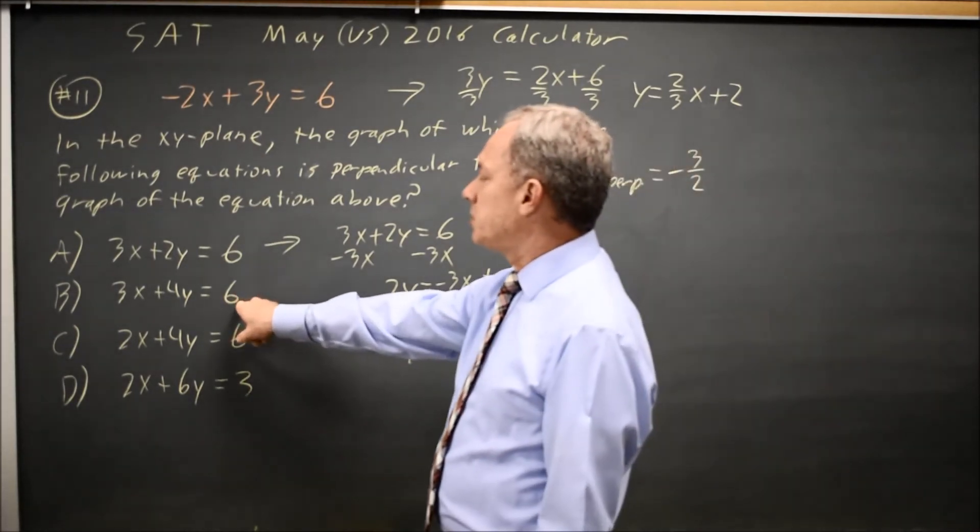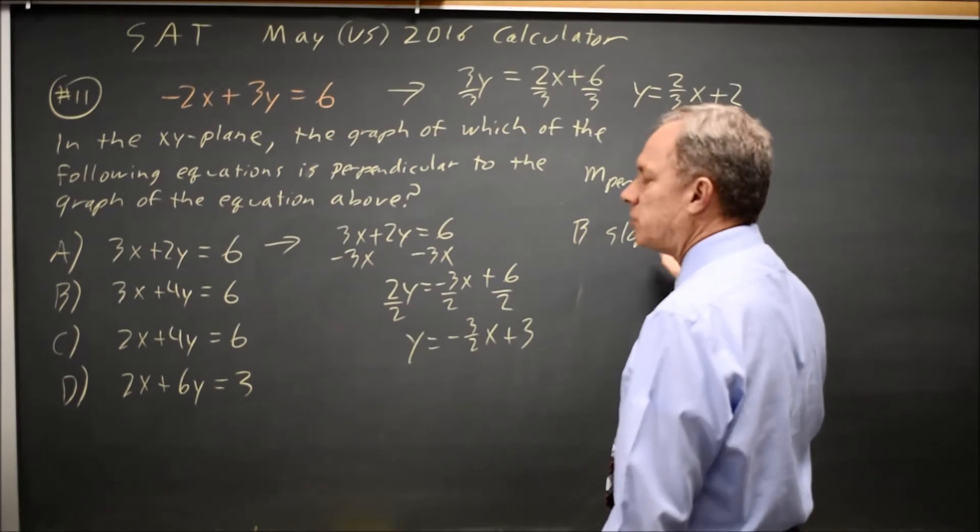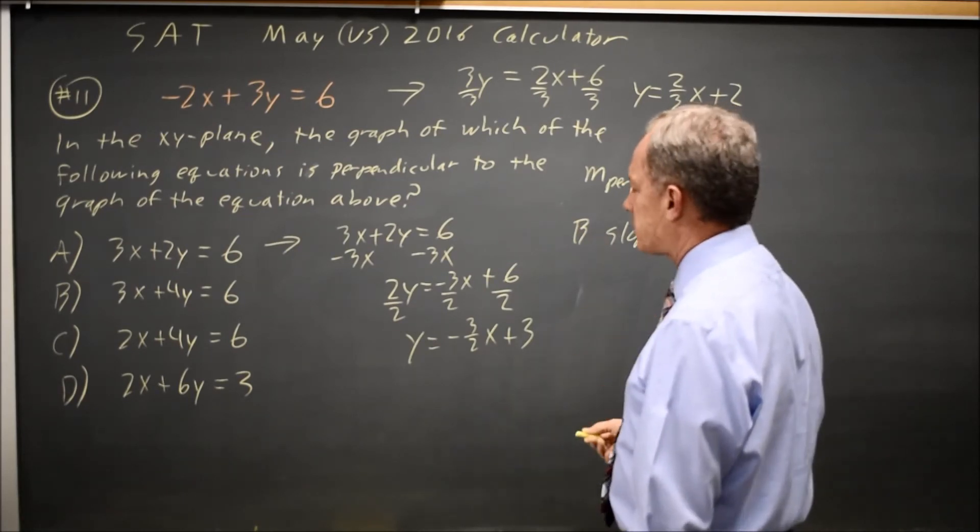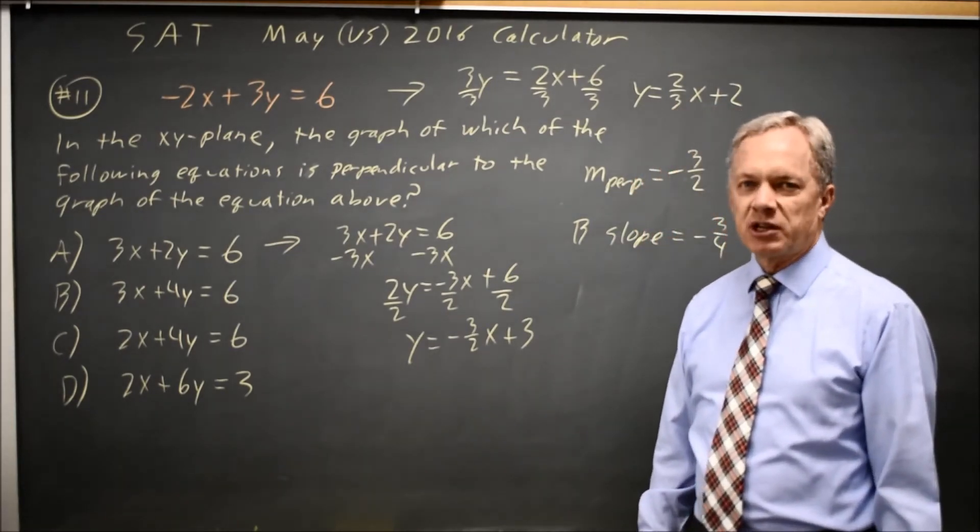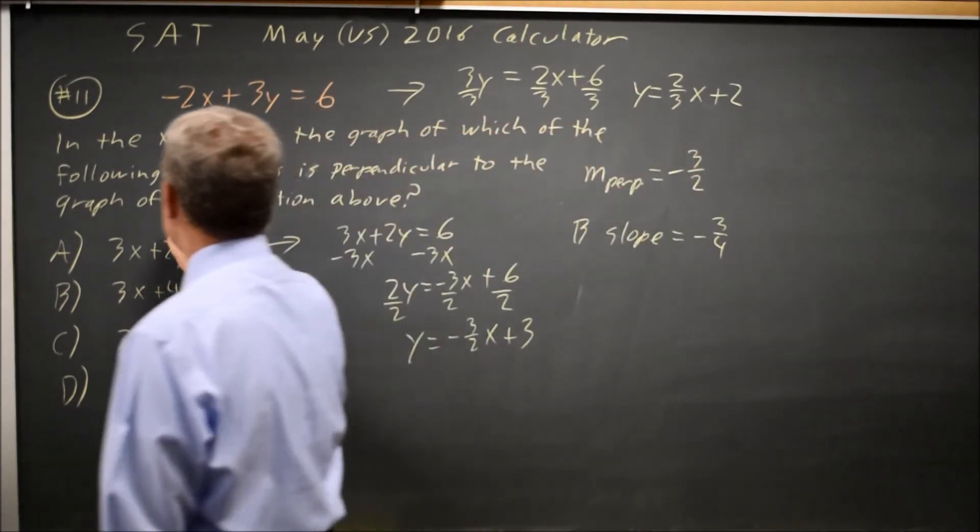If I put B in slope-intercept, the slope will be negative 3/4, which is not negative 3/2. C will have a slope of negative 1/2, and D will have a slope of negative 1/3. A is the only choice with the slope of negative 3/2.